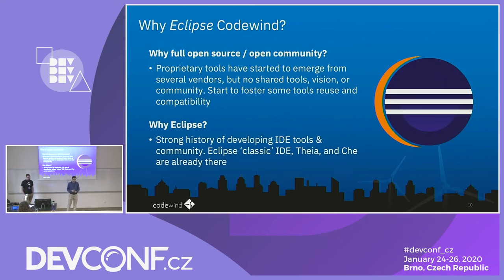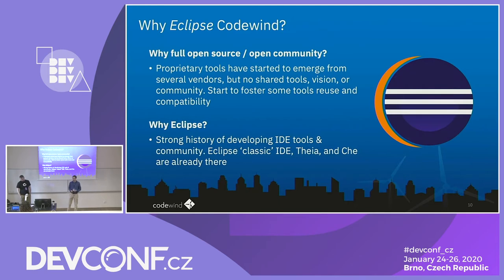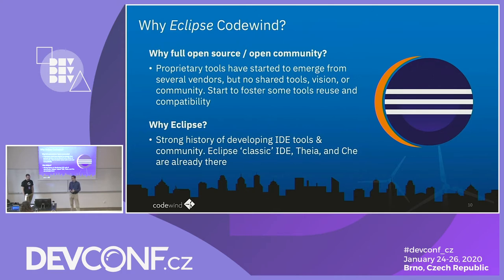So why Eclipse? We open sourced it because we want it to become a platform. As shown, you can have different build systems, and no matter which build system you have, you can build extensions and run them as part of the Codewind framework. Eclipse itself is the Eclipse Foundation — we've got a long track record, and many development tools are part of the Foundation, including Eclipse IDE, Eclipse Che, the editors, and Che itself is where we're doing our integration.